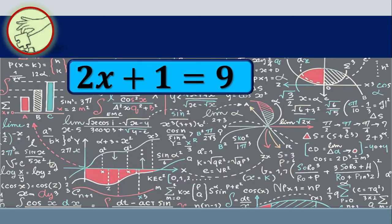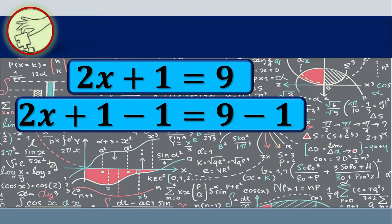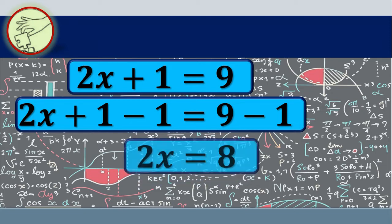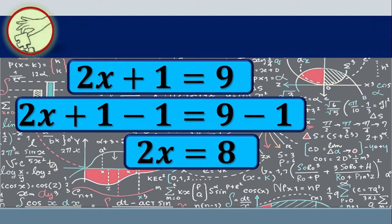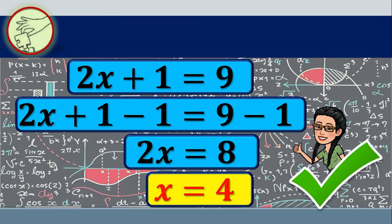In the previous year, you learned about linear equations in one variable such as 2x plus 1 is equal to 9. It has only one variable, which is x, and the exponent of x is 1. If you do not see an exponent on the variable, automatically the exponent is 1. To get the value of x, we subtract both sides by 1, leaving 2x equals 8, then multiply both sides by one half so that x equals 4.